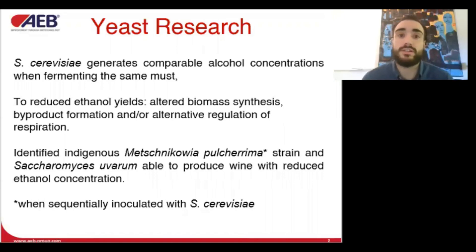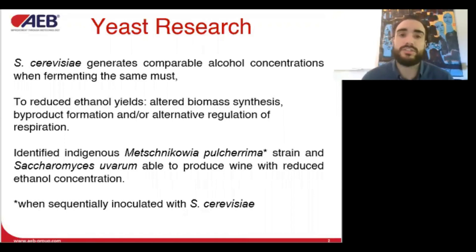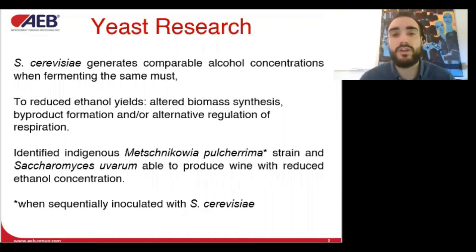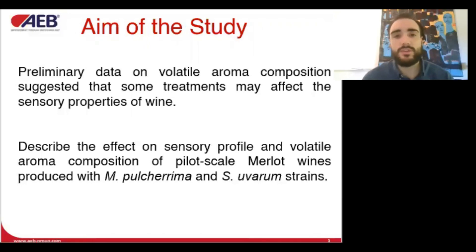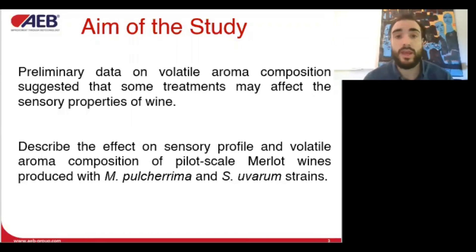Non-conventional yeast can be non-Saccharomyces or non-Saccharomyces cerevisiae. In previous experiments by the same author, indigenous strains of Metschnikowia pulcherrima and indigenous strains of Saccharomyces uvarum were selected for very reduced production of ethanol. The aim of the study is to confirm the laboratory results and to describe the effect of these two yeasts on the sensory profile and volatile composition in Merlot wines.